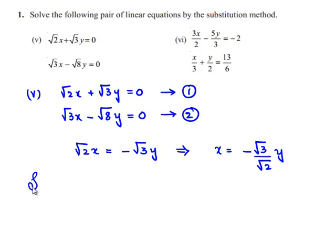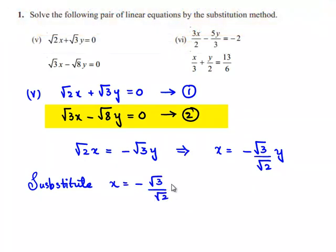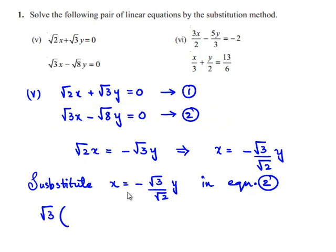Let us substitute the value of x, which is minus root 3 divided by root 2 times of y, in equation number 2. We get root 3 times of, in place of x, we can substitute minus root 3 by root 2 times of y, and here we have minus root 8 y is equal to 0.